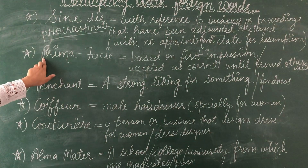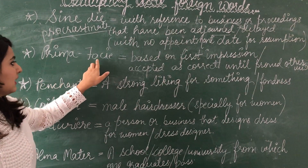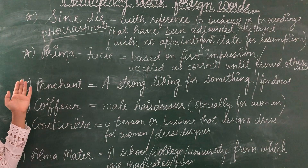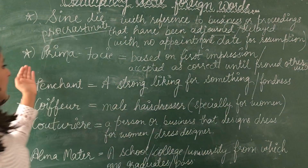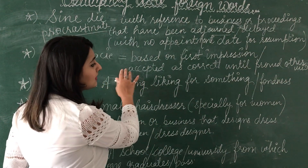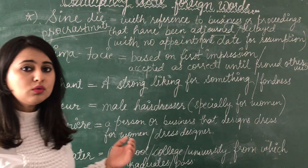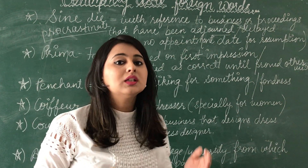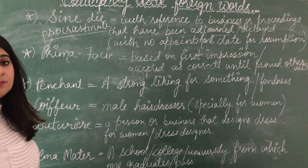The next word — the seventh word — is 'prima facie', spelled P-R-I-M-A F-A-C-I-E. We pronounce it like 'prima facie'. Prima facie means based on first impressions, accepted as correct until proved otherwise. Until any contrary evidence is found, something is considered true — that is prima facie.